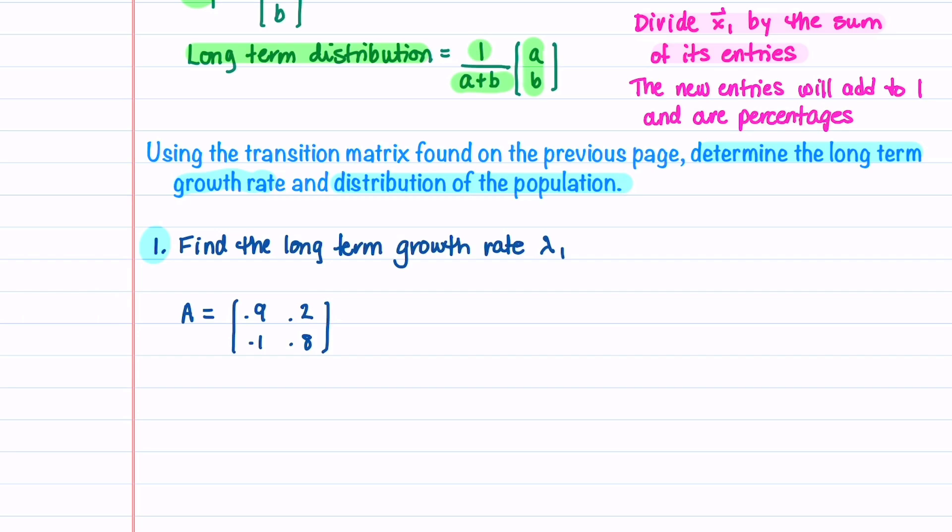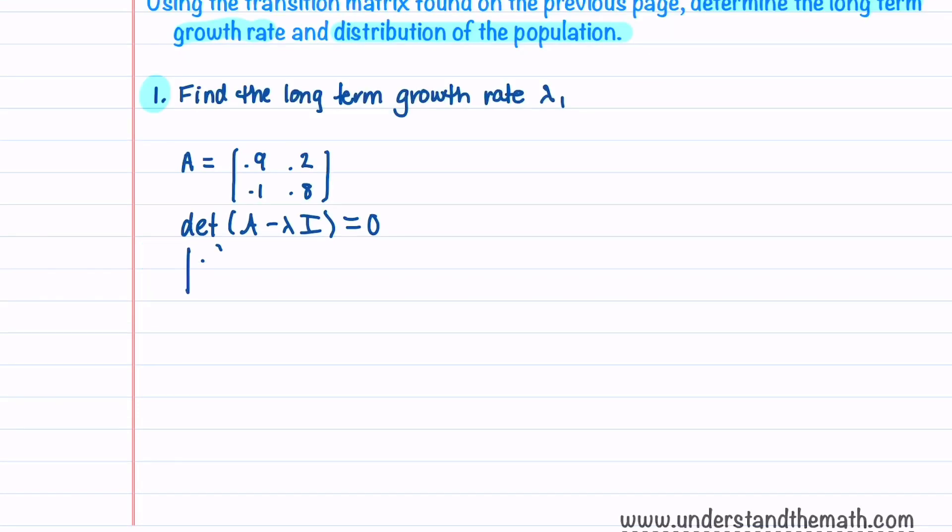We can find λ_1 by setting det(A - λI) = 0. We have 0.9 - λ. Remember we just subtract λ off the main diagonal entries, and then we have 0.8 - λ. We'll now multiply the main diagonal entries and subtract off the off-diagonal entries, and that equals 0.